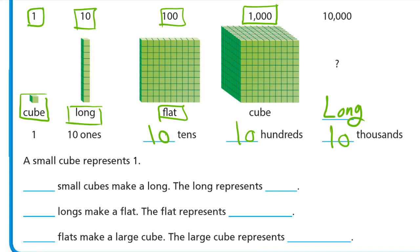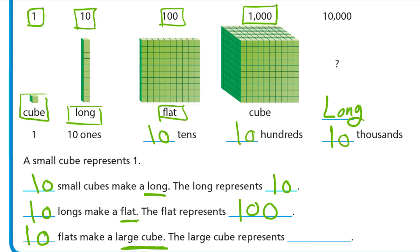A small cube represents 1. 10 small cubes make a long; the long represents 10 ones, which is 10. Then 10 longs make a flat; the flat represents 10 tens, which is 100. So: small cube = 1, long = 10, flat = 100. Then 10 flats make a large cube; the large cube represents 1,000 because 10 hundreds is 1,000.